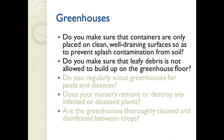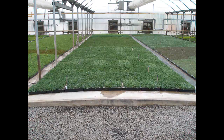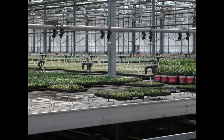What about greenhouses? Do you make sure that containers are only placed on clean, well-draining surfaces to prevent splash contamination, and that leafy debris is not allowed to build up on the greenhouse floor? Here is a greenhouse with a nice arch to promote good drainage, noting the absence of leafy debris — and think how easy it will be to clean between crops. Here is another very clean greenhouse where there is little opportunity for contamination from soil or water splash onto the plants.